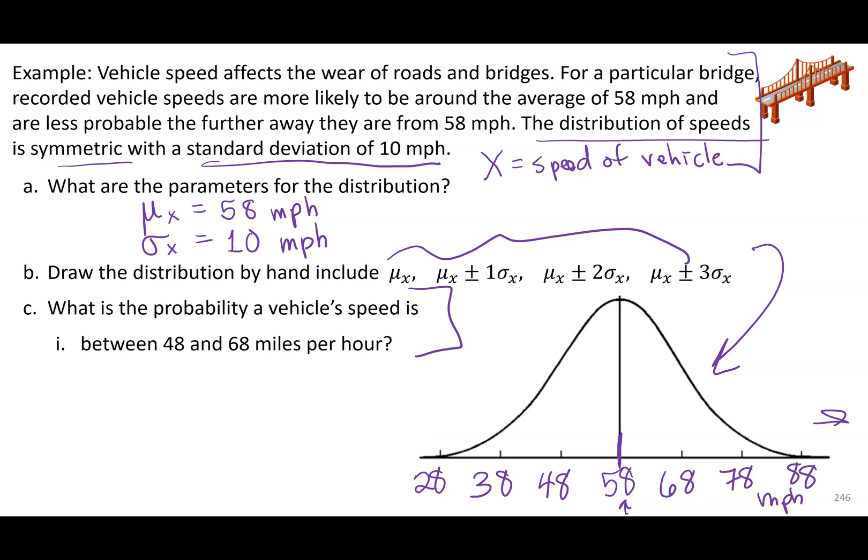So here I can go ahead and I can use that empirical rule to answer this question. What is the probability I randomly select a vehicle and that vehicle is going between 48 and 68 miles per hour? So between 48 and 68. So I am looking at the mean plus or minus one standard deviation. So this would be around 0.68 or 68 percent. So there's a probability about 68 percent of the time I randomly select a vehicle, it's going between 48 and 68 miles per hour.